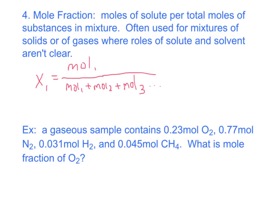Okay. So we have an example problem. The gaseous sample contains 0.23 moles of O2, 0.77 moles of N2, 0.31 moles of H2, and 0.045 moles of methane. What's the mole fraction of O2? Yes. So how do we do this, Mr. Hunter? So the top one is going to be 0.23 moles. 0.23 moles of O2. We're going to divide it by the sum total of all of them. Which I believe adds up to 1.076. I believe. Let me check that again. So we have 1.076 moles of gas total in the mixture.